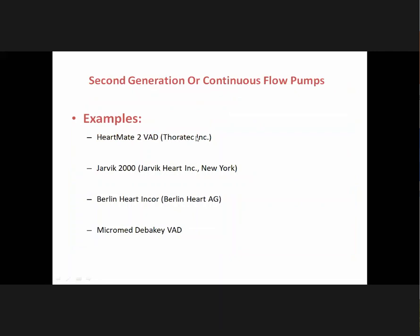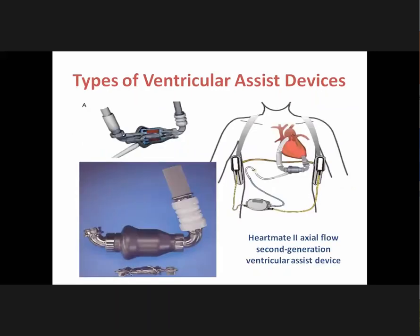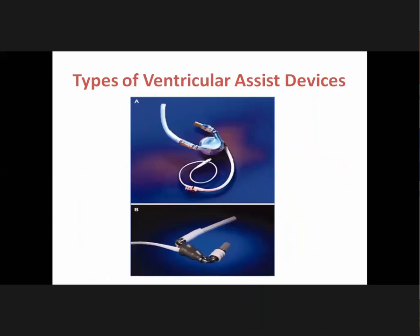The second-generation or continuous flow systems include the HeartMate 2, Jarvik 2000, Berlin Heart INCOR, and Micromed DeBakey VAD. The HeartMate 2 is a continuous flow axial blood pump with an internal rotor with helical blades that curve around a central shaft. The twisted shape of the outlet stator vanes converts radial blood velocity to axial direction; it can pump around 10 liters per minute. In the absence of a blood sac, there is no need for venting. Compared to first-generation, the size of HeartMate 2 has come down drastically, and technology has changed from a pneumatically driven system to an axial flow motor with rotor blade.